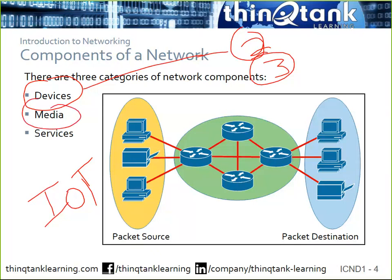We'll also talk about the media — how do we interconnect our devices? This area is shifting a lot. Wireless is gradually starting to replace wired infrastructure because we're seeing 802.11ac wave 2 with gigabit speeds, multiple-input multiple-output technology, and full duplex operations. The media includes twisted pair Ethernet, fiber optics, and wireless.